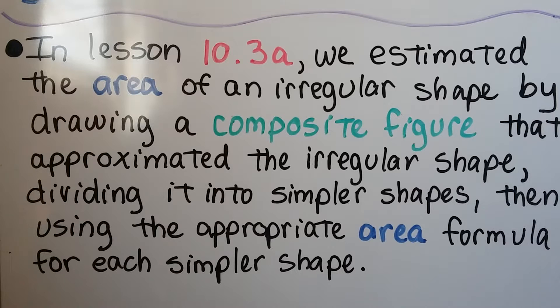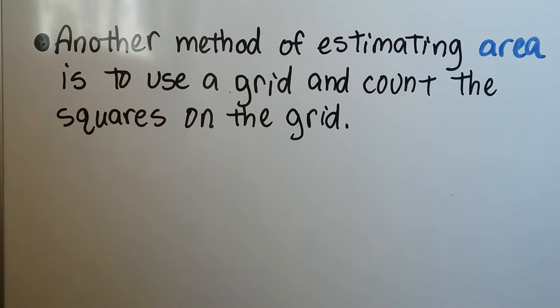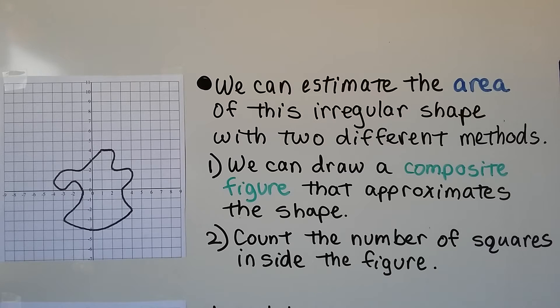In lesson 10.3a, we estimated the area of an irregular shape by drawing a composite figure that approximated the irregular shape, dividing it into simpler shapes, then using the appropriate area formula for each simpler shape. Another method of estimating area is to use a grid and count the squares on the grid. We can estimate the area of this irregular shape with two different methods. One way we can draw a composite figure that approximates the shape. We'll cut off the curves and just make trapezoids and rectangles and stuff.